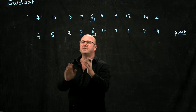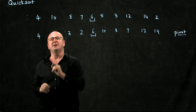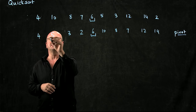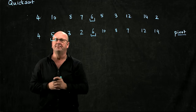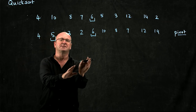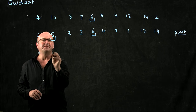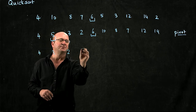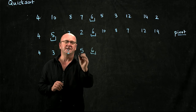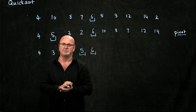All we've got to do is take the left side of the list and choose a pivot point — in this case let's choose the 5 — and we move the smaller things to the left and the larger things to the right. So we move the 4, the 3, the 2, and the 5 stays where it is. The 6 stays where it is as well.